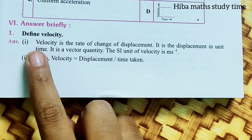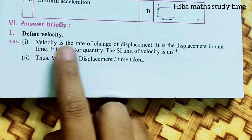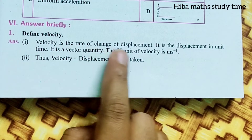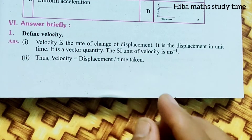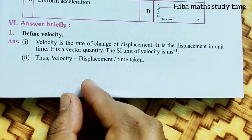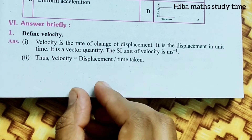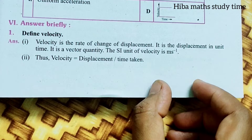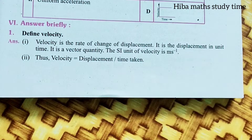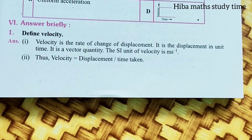Velocity is the rate of change of displacement. For a moving object, the starting point and the end point, and the time to travel gives the velocity. Speed and velocity are related concepts.